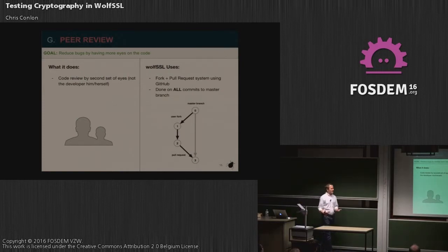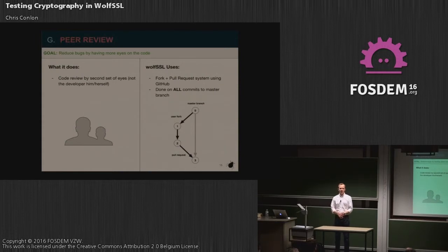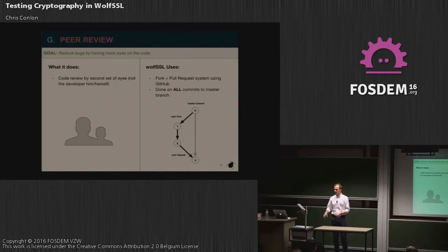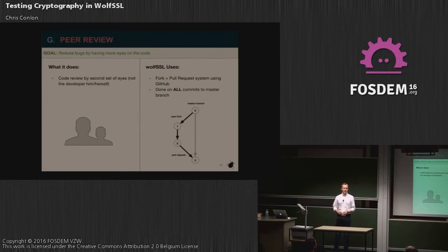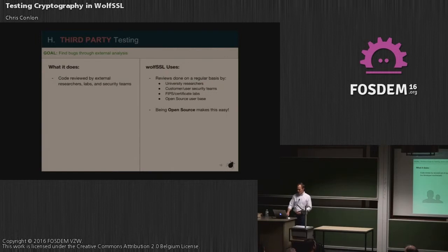Another way to stop bugs getting into main code branches is through peer review. The more eyes looking at code, the better the code is in the end. We use a fork-and-pull-request system. All of our code is on GitHub. Developers fork the code into their own fork, do their development on a feature or bug fix branch, and then submit a pull request back to our master. That pull request is assigned to someone independent of the developer, who reviews and tests it before merging back into master. Having two sets of eyes really reduces the number of bugs that end up in the master branch, and this is done on every commit.